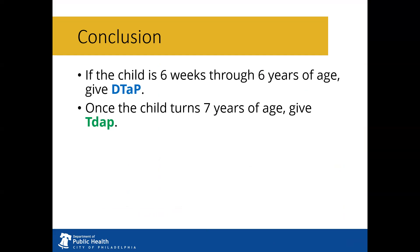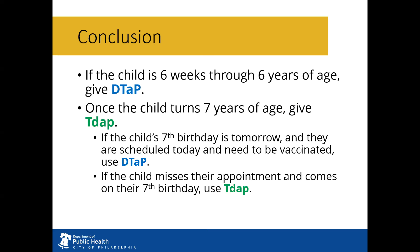In conclusion, patients' birthdates are very important for these two vaccines. If the child is 6 weeks through 6 years of age, give DTaP. Once the child turns 7 years of age, give Tdap. If the child's 7th birthday is tomorrow and they are scheduled today and need to be vaccinated, use DTaP — remember, they're still 6 today. However, if the child misses their appointment and comes on their 7th birthday, they're now 7, so we would use Tdap.